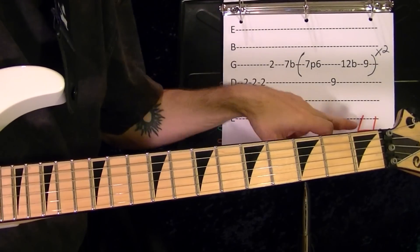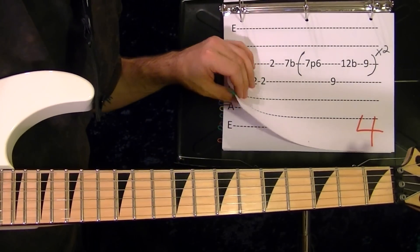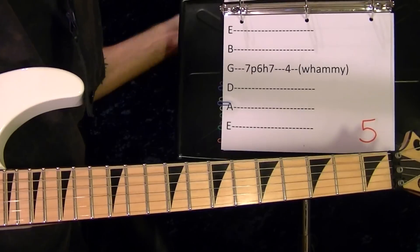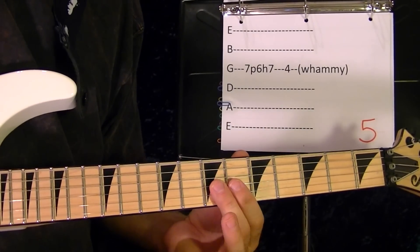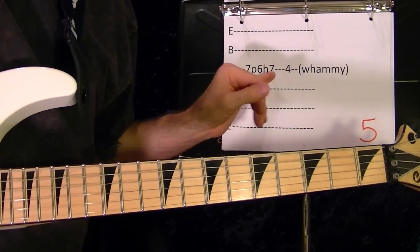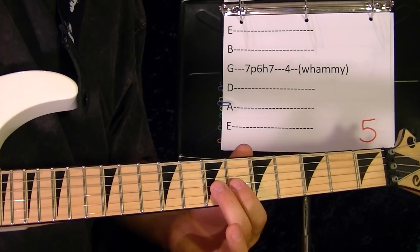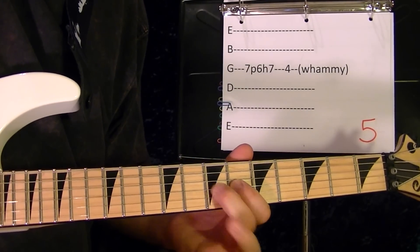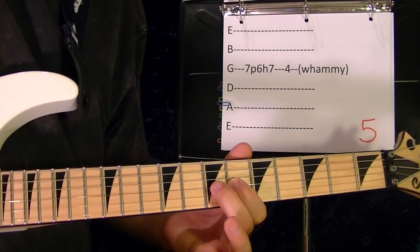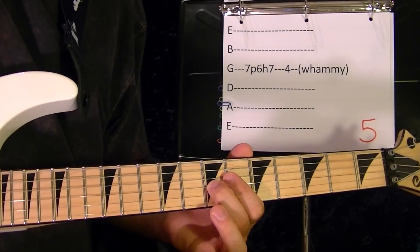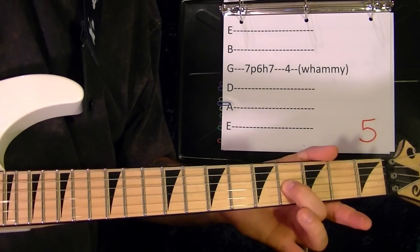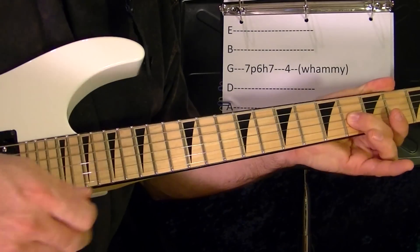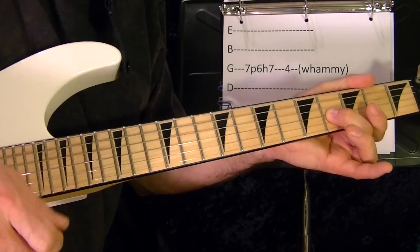So that's riff number four, which you'll do again. And the third string seventh pull off the sixth, the seventh, slide down to the fourth fret, a little bit of a whammy if you want.